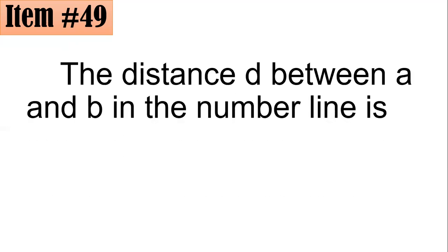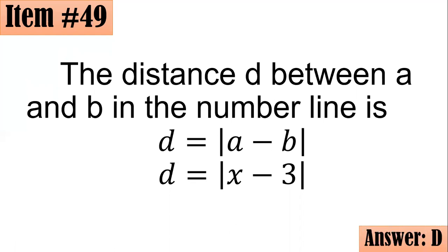From here, remember this. If you have this one, the distance D between two points, A and B, in the number line is in fact the absolute value of their difference. So following the same logic, if you let A be equal to X and you let the second one be 3, then the distance between them is the absolute value of X minus 3, letter D.